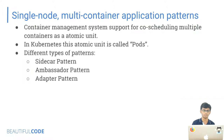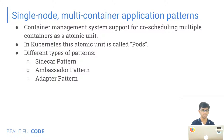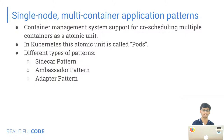Today we are going to discuss single-node multi-container application patterns. What I mean by single node is that most container orchestration software supports grouping of containers onto a single node. In Kubernetes, this is called a pod. There are different kinds of patterns in this sector: basically the sidecar pattern, ambassador pattern, and adapter pattern.